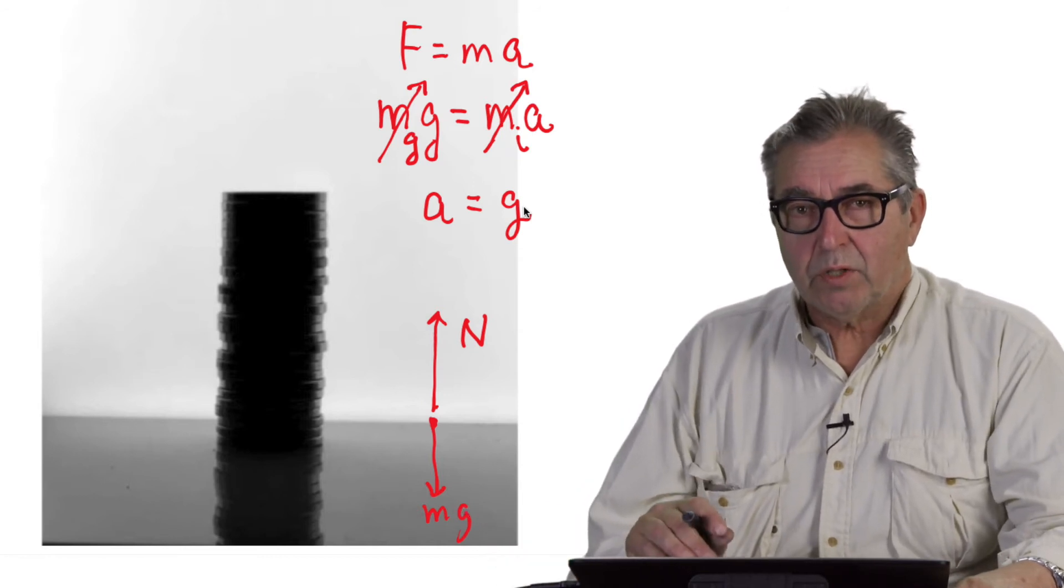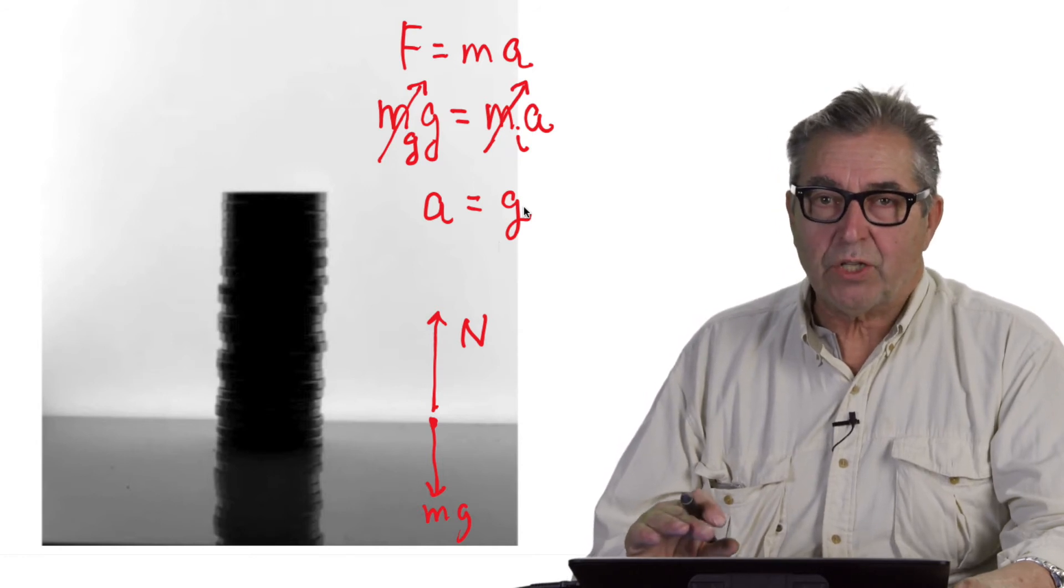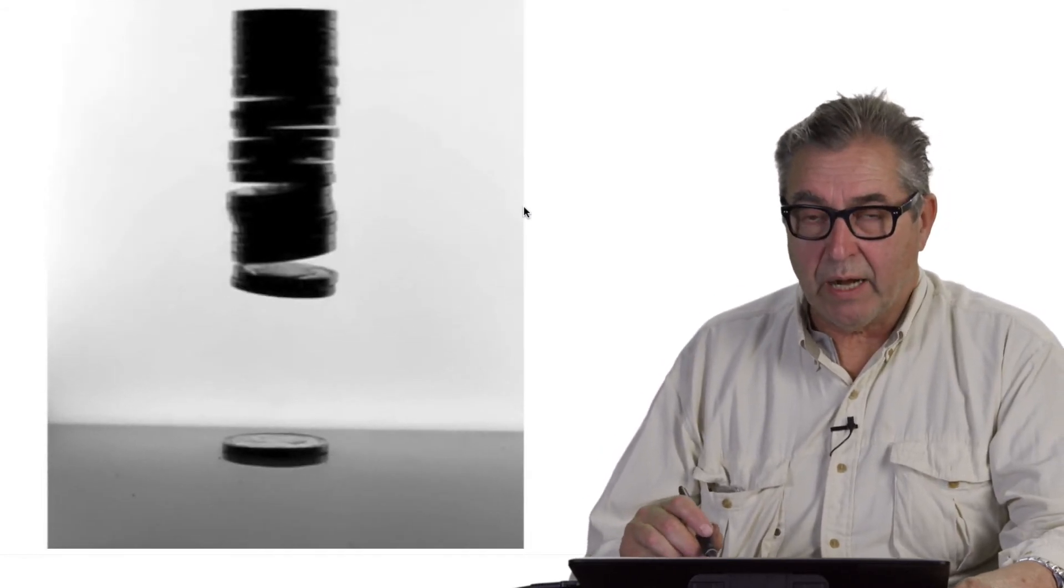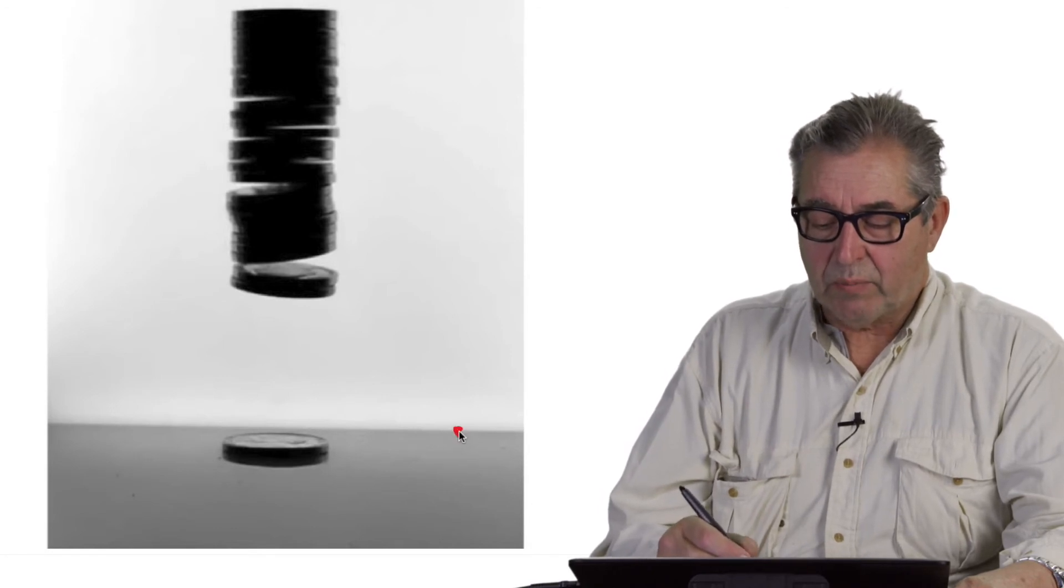This might be why your students mostly would have predicted that the coins would remain stationary during drop. However, we suddenly saw that the coins jumped up into the air. Why was it then that the coins jumped up into the air?